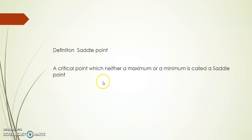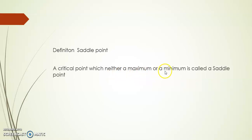Let's have the definition of saddle point. A critical point which is neither a maximum nor a minimum is called a saddle point. So a point which is neither a maximum nor a minimum is called a saddle point.